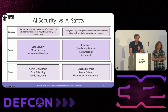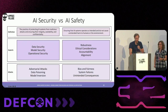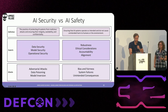AI security protects AI systems from malicious threats like the CIA triad model. AI safety ensures that systems operate as intended without causing unintended harm, focusing on alignment with human values.